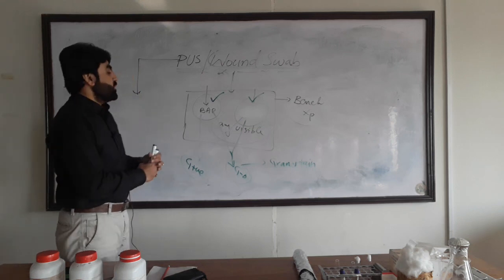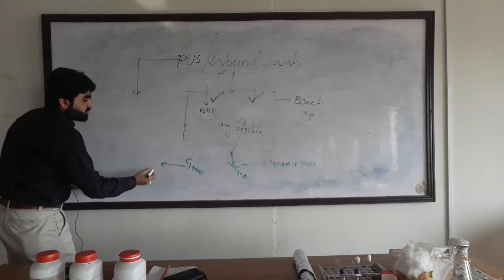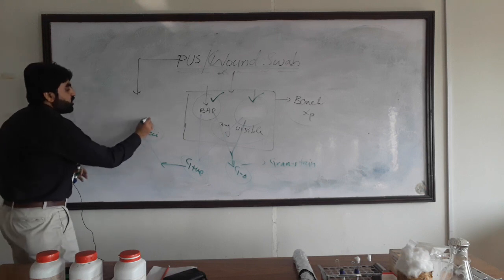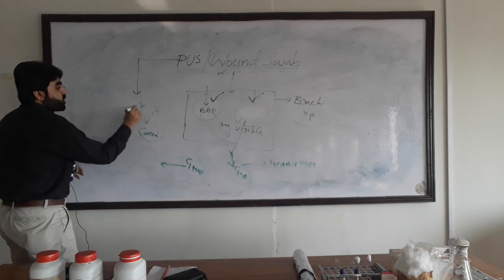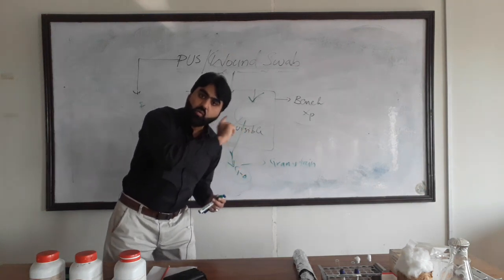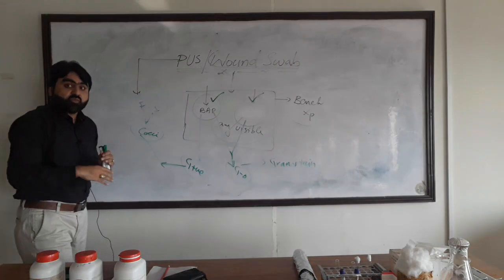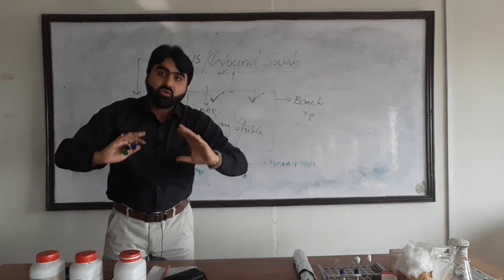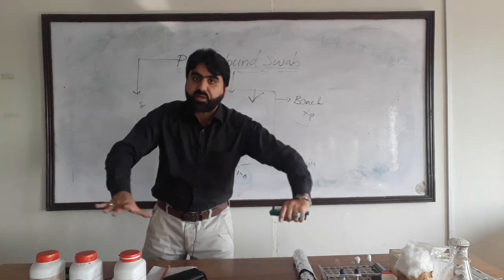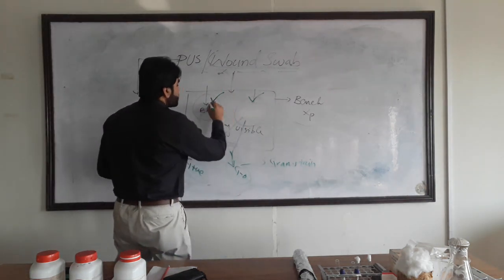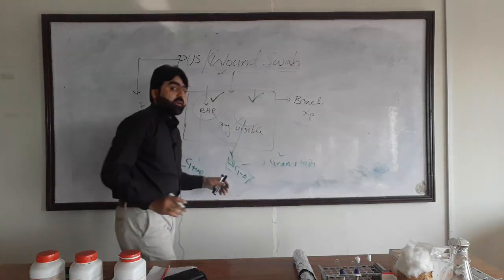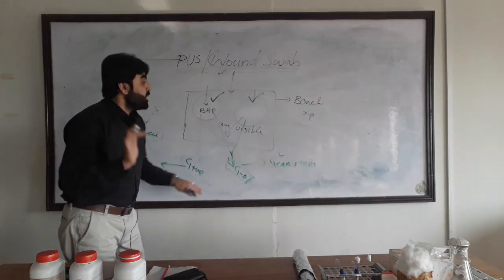These are the tools and schemes we use on the bench for identifying possible pathogens in pus or wound swab. If the gram stain shows gram-positive cocci, we will look for Staphylococcus aureus, Streptococcus, or Enterococcus — the three possible gram-positive cocci pathogens in pus or wound swab. In the other case, if there is growth on both blood agar and MacConkey agar, the possible pathogen could be gram-negative rods; perform gram stain to confirm.